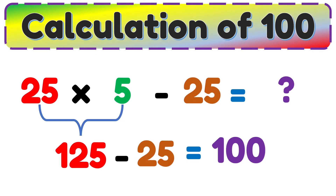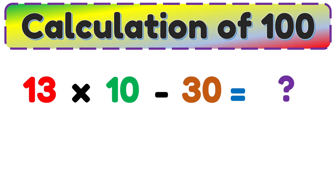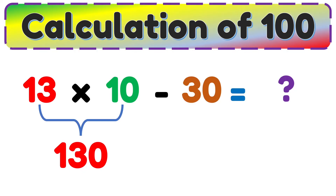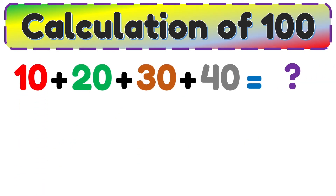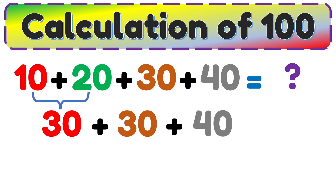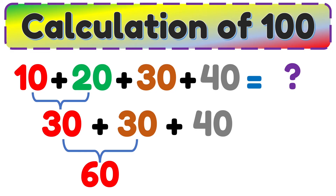13 multiplied by 10 minus 30. 13 multiplied by 10 is equal to 130, 130 minus 30 is equal to 100. 10 plus 20 plus 30 plus 40. 10 plus 20 is equal to 30, 30 plus 30 plus 40. 30 plus 30 is equal to 60, 60 plus 40 is equal to 100.